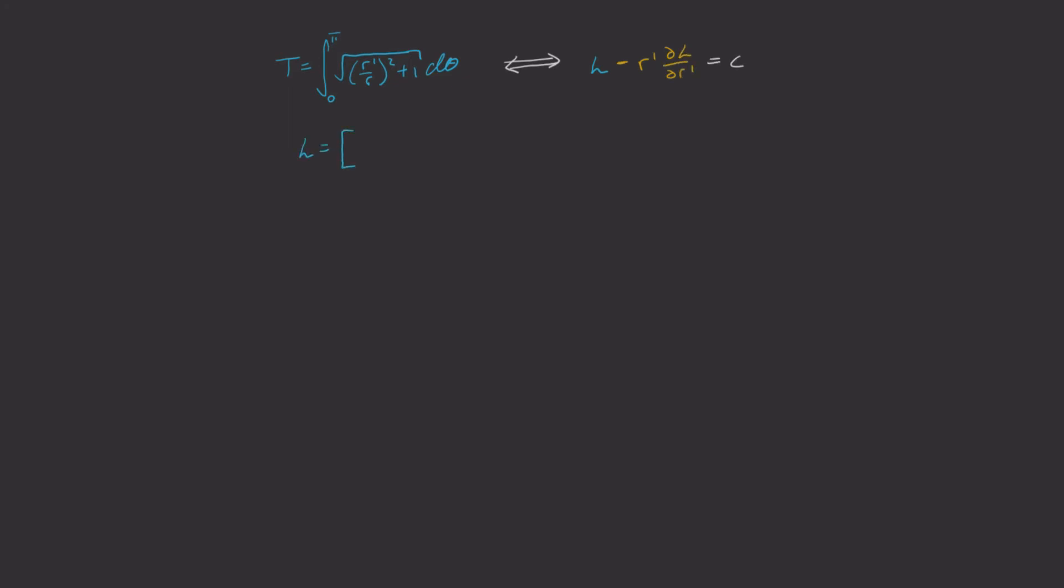In our case, L is equal to r dash on r plus 1, all to the power of a half. And this means del L del r dash is calculated by bringing down the half, subtracting one from the exponent, and multiplying by the inside derivative. There we go. Now let's put everything together.